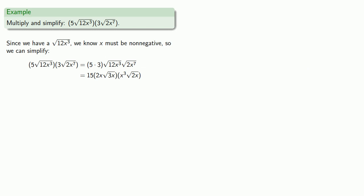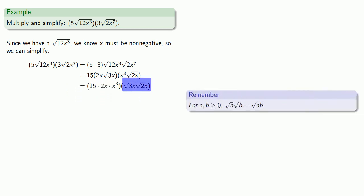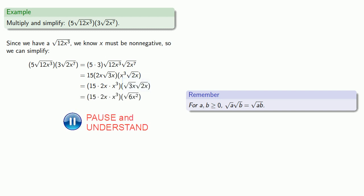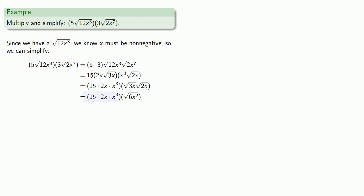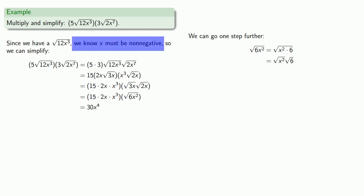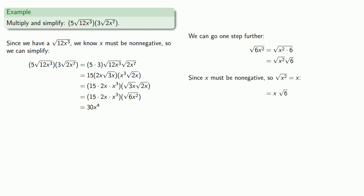We rearrange our factors so all of the coefficients are multiplied together and our square roots are multiplied together. The product of square roots is the square root of the product. We multiply our coefficients together. Square root of 6x squared — x squared times 6 — is a perfect square, and the square root of a product is the product of the square roots. Since x must be non-negative, square root of x squared is just x. Finally, we multiply the factors outside the radical together to get our final simplified answer.